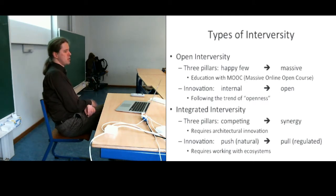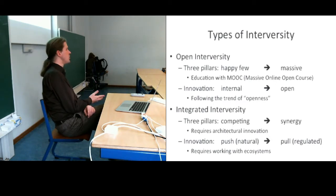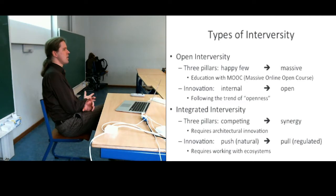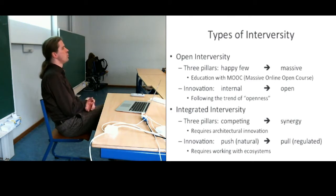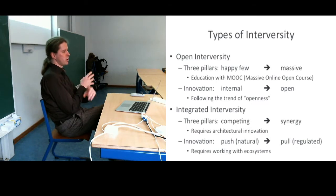Both have a different relation to the three pillars and to what is being innovated. In the open interversity, the relation to the three pillars is about becoming massive. What you have is that university, most of the things it does, is still only for the happy few. The happy few in society go to university, but the happy few in university make a PhD, and the happy few PhDs create a spin-off. So it's always the top of the top.